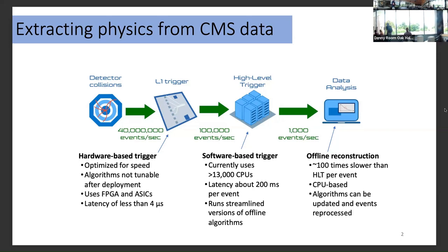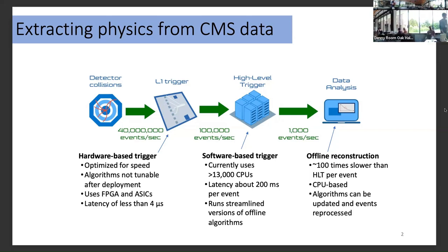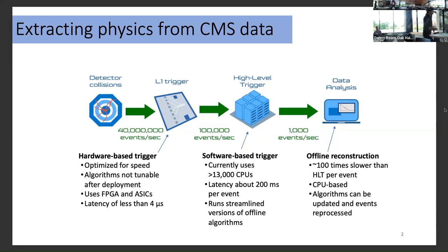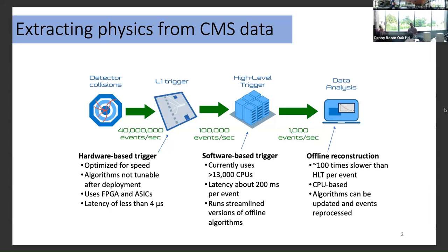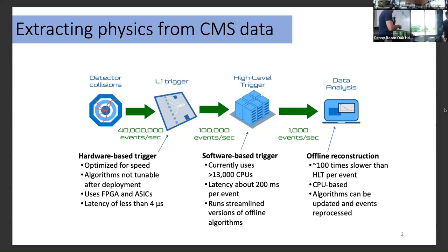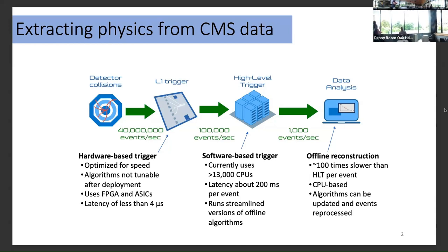Once you deploy your algorithms, they're not really tunable, especially if they're ASICs. Then there's a second layer, the high-level trigger, still part of the overall trigger system, but based on CPUs with much more time per event allowed — 200 milliseconds. Here you run streamlined versions of your offline algorithms, reconstructing somewhat high-level objects like electrons, muons, and primitive jets. Events that pass the high-level trigger are written out, stored, and then analyzed later offline, where there aren't as many latency constraints and this is currently a purely CPU-based system.